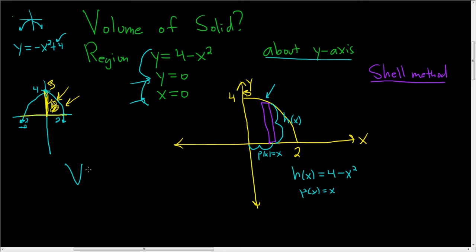So the volume is equal to 2 pi. And we're integrating with respect to x, so we're going from 0 to 2. And the formula says you just multiply p and h. So x times 4 minus x squared, and then we still have the dx.